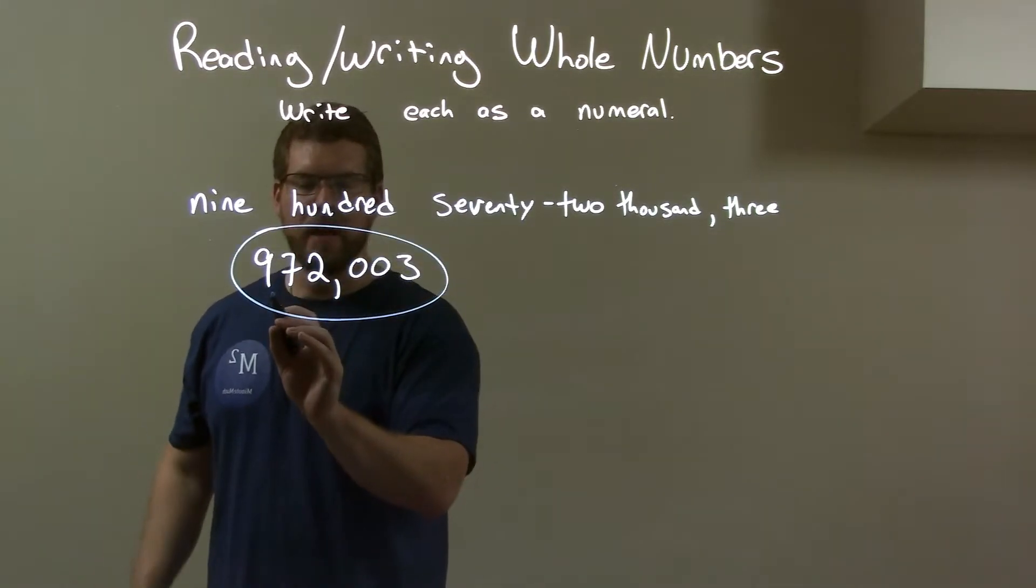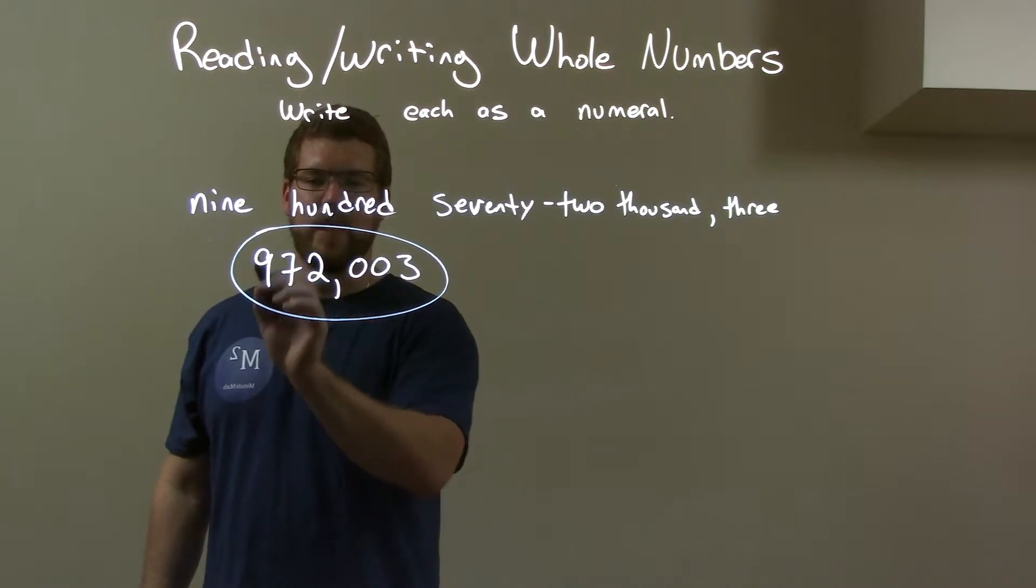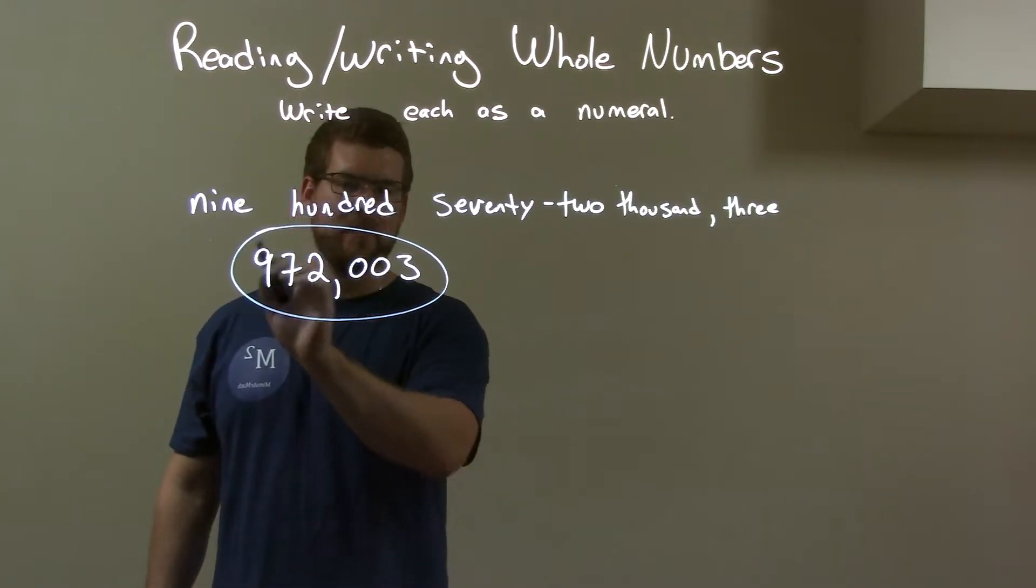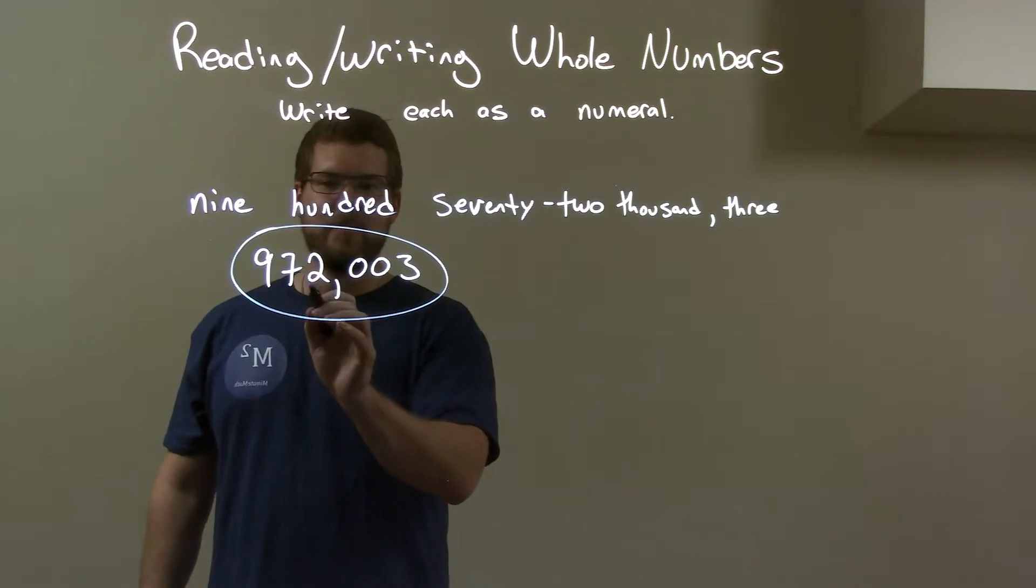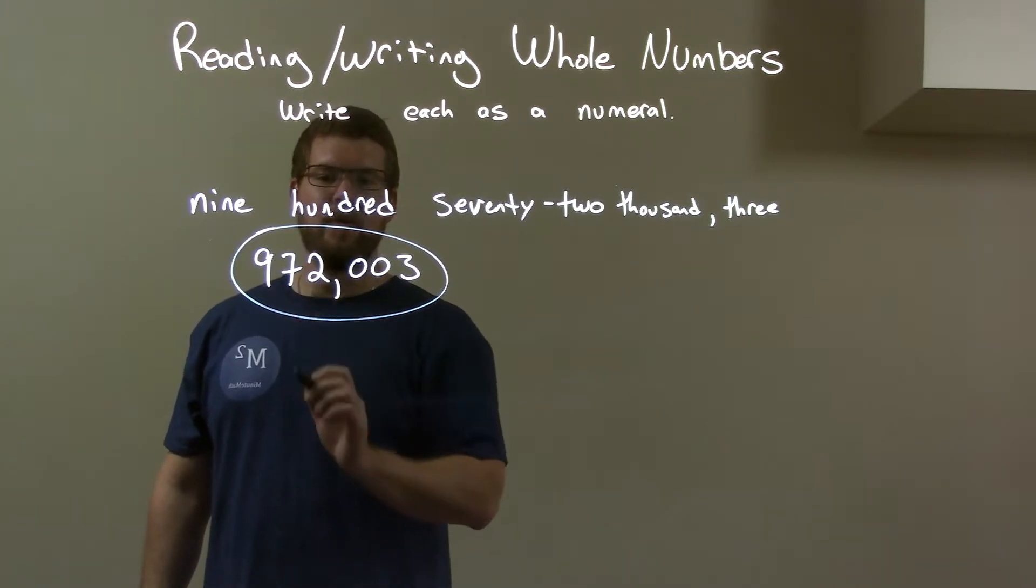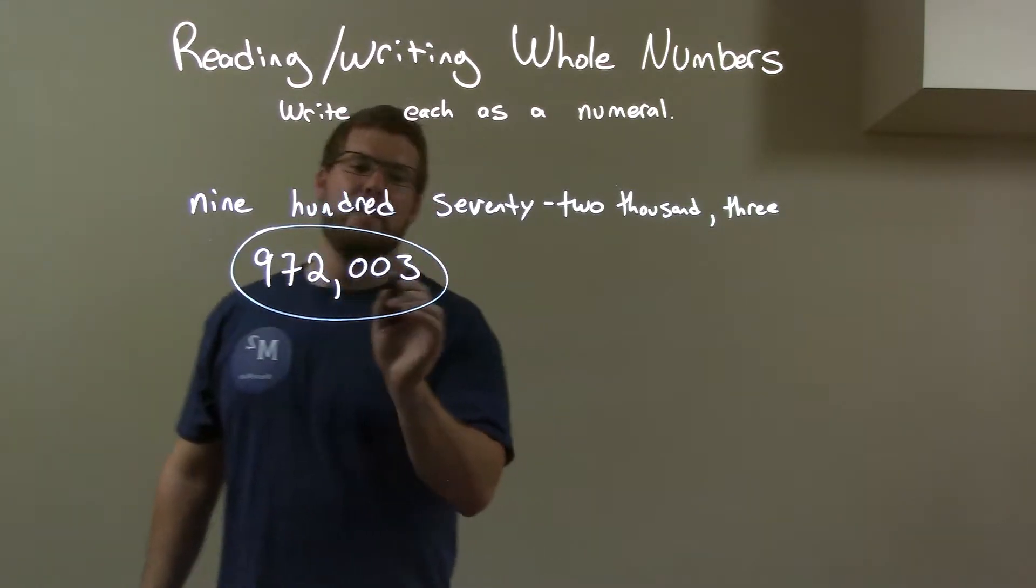So here we can see we have our 972, that's in the hundreds of thousands right here. Nine in the 100,000, seven in the 10,000, two in the 1,000 place, and we have the three.